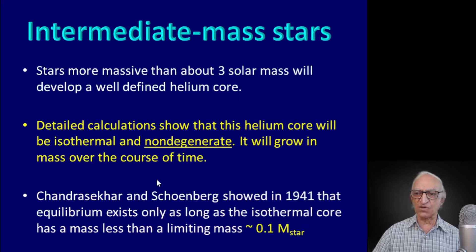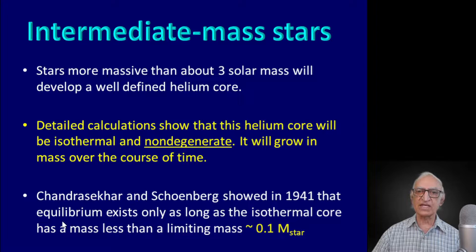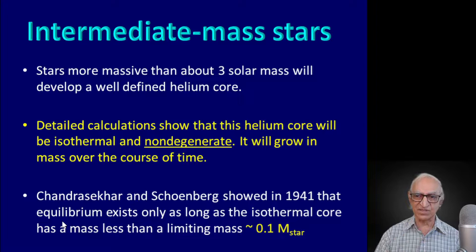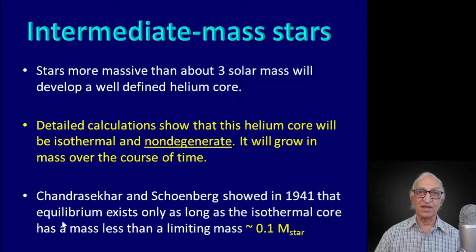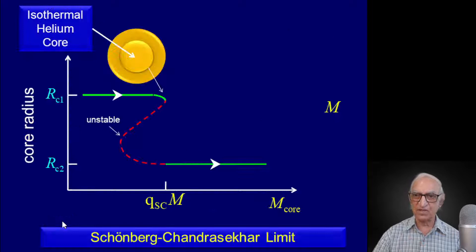A long, long time ago — more than 80 years ago — Chandrasekhar and one of his young research associates named Schoenberg showed that equilibrium exists only as long as the isothermal core of the star has a mass less than roughly 0.1 times the mass of the star — 10% of the mass of the star. That was, at that stage in 1941, just a mathematical theorem, the sort of theorem that Chandrasekhar was very fond of proving. Sixty, seventy, eighty years later, this theorem has acquired great significance, as we shall now see when we invoke it.